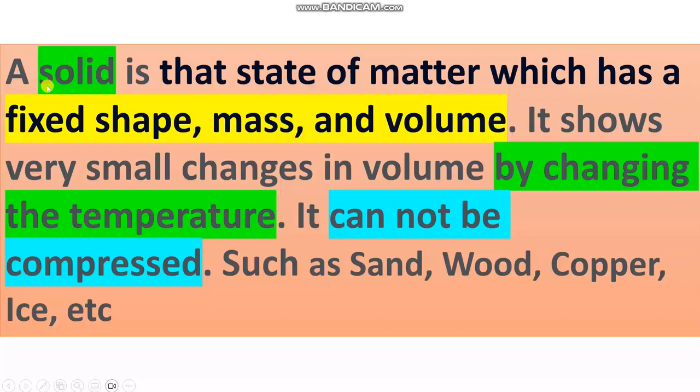Here, the definition of solid. The solid is the state of matter which has fixed shape, mass, and volume. It shows very small change in volume by changing the temperature. If the temperature increases with heat, it will change dimension. It cannot be compressed, so uncompressed, such as sand, wood, copper, ice, etc.